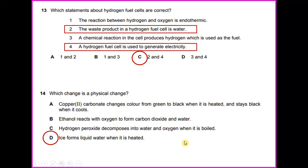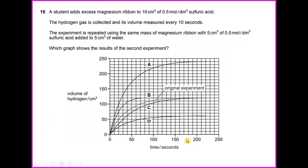A student added excess magnesium ribbon to 10 cm3 of 0.5 mol/dm3 sulfuric acid. The hydrogen gas is collected and its volume measured every 10 seconds. The experiment is repeated using the same mass of magnesium ribbon with 5 cm3 of 0.5 mol/dm3 sulfuric acid added to 5 cm3 of water. Which graph shows the result of the second experiment? In this case, number 15 gives the answer of D, which has the volume of hydrogen at 50 and the time taken will be around 100 seconds.